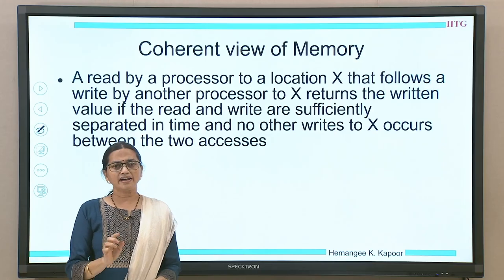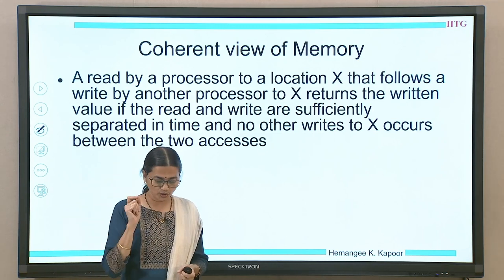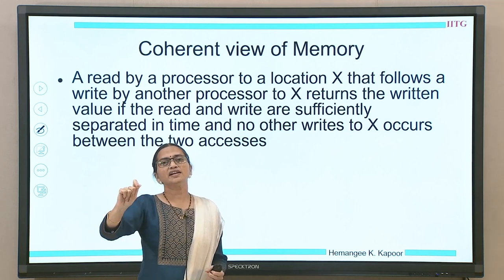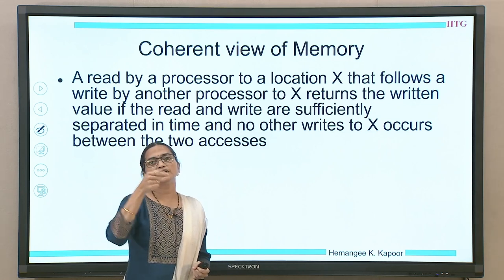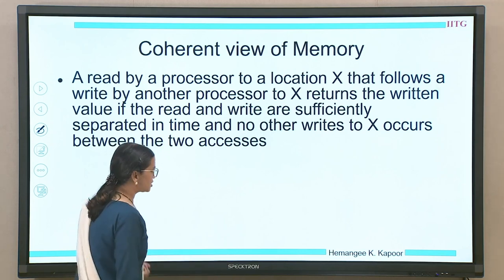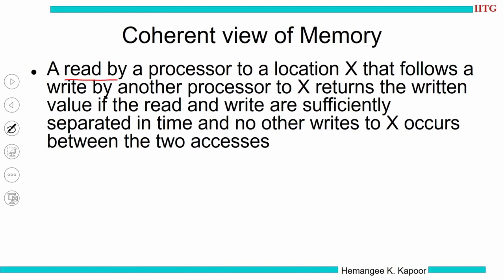Going back to the definition: a read by a processor to a location x that follows a write by another processor to that same location x — if these two are separated sufficiently in time, then the changes by the other processor will reach the current processor. That is the coherent view of memory: changes by another processor are seen by the remaining processors in the system. The previous program order condition said the same processor wrote, whereas here the write is done by another processor. There has to be enough time for the write of the other processor to reach the system level so that another processor can see this change, and only then we will be able to access the current value.